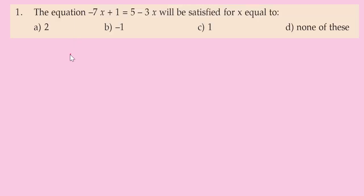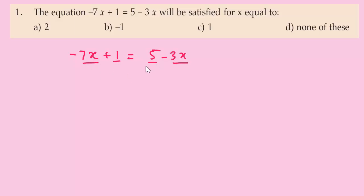The equation is minus 7x plus 1 equal to 5 minus 3x. We bring terms to one side: if a term changes side, plus becomes minus and minus becomes plus.